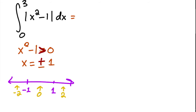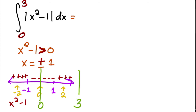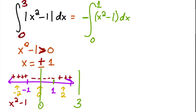Breaking up the interval from zero to three: from zero to one, x squared minus one is negative, so we multiply that integral by a negative. From one to three it's positive, so we just write positive x squared minus one dx. So the setup is: negative integral from zero to one of x squared minus one dx, plus integral from one to three of x squared minus one dx.